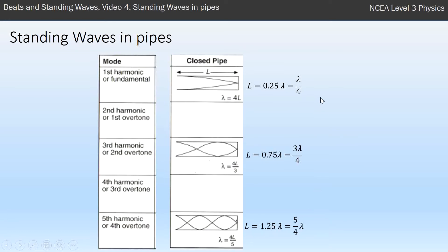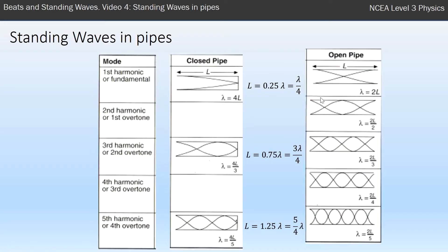In our open pipe, we've got to have an anti-node at each end. The solutions we have, or the standing waves we can fit in there—this is half a wave, we can fit in a full wave.